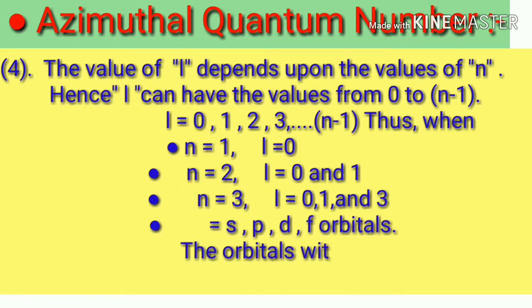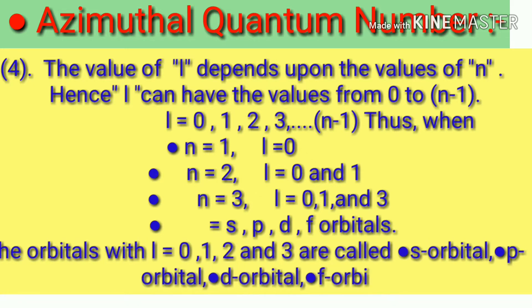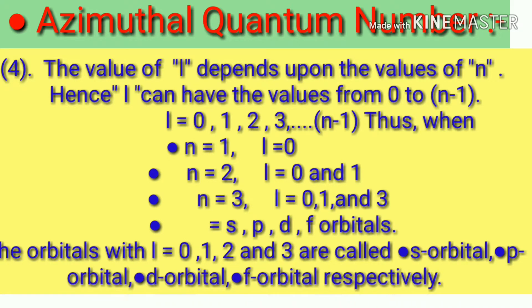The orbitals with L equals 0, 1, 2, and 3 are called S orbital, P orbital, D orbital, and F orbital respectively.